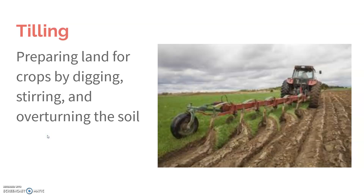We're going to start by talking about tilling. Tilling is basically like fluffing up the soil. They overturn the top layer of the soil in order to break the roots of any competing vegetation, as well as to aerate the soil, just to make it a better condition for that growing crop.